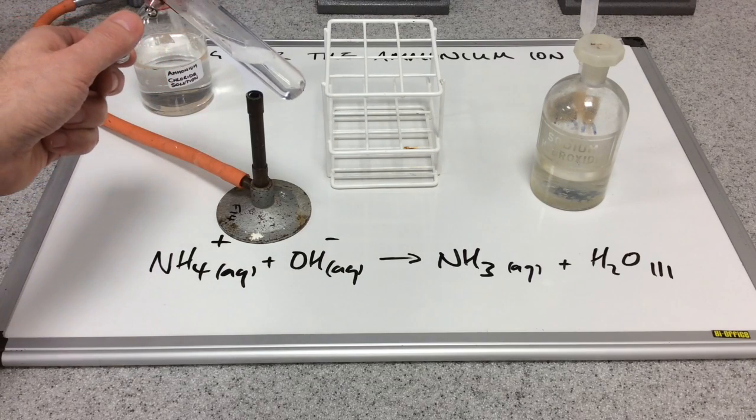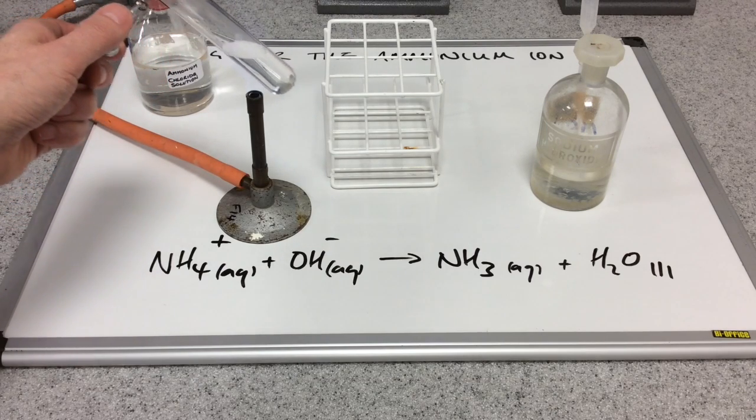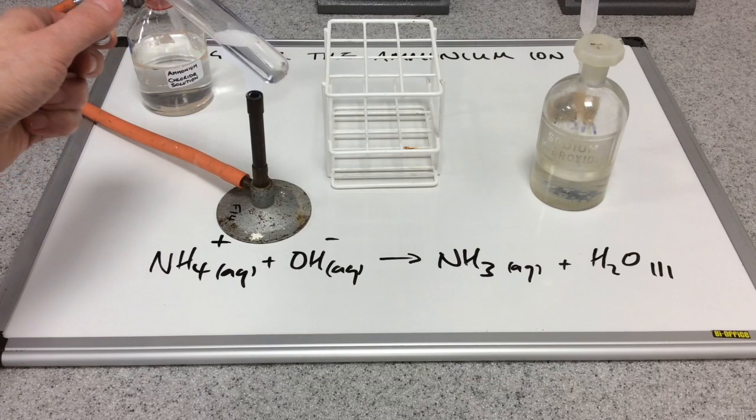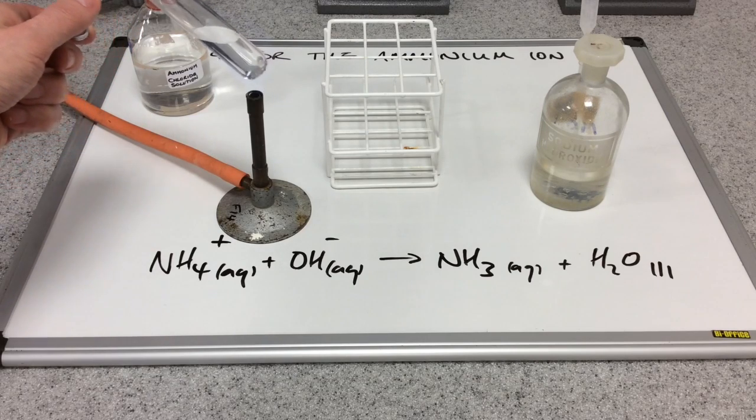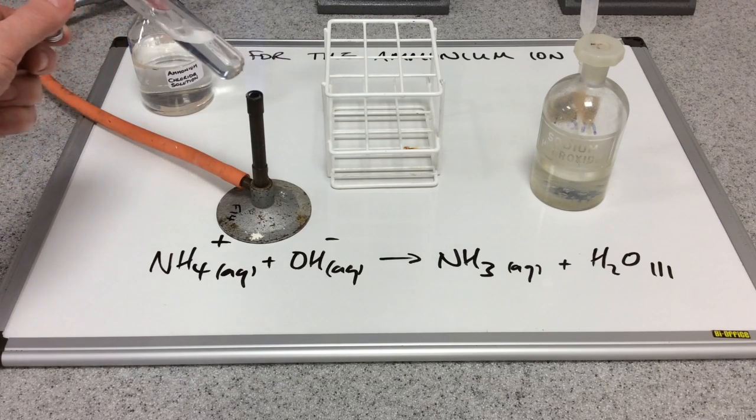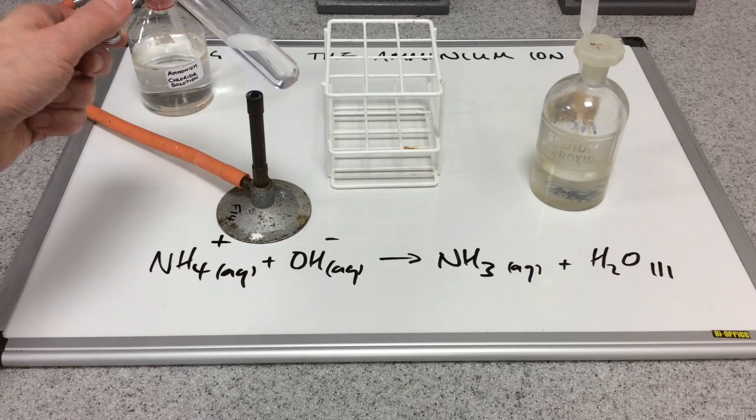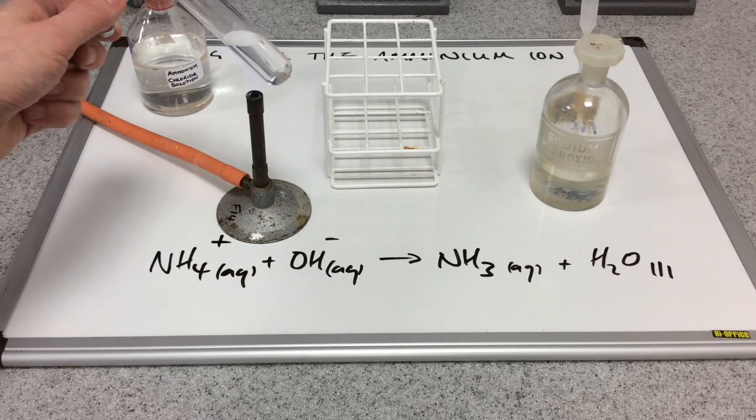I'm just warming the contents of the test tube. We're trying to turn that ammonia that's dissolved in the water into a gas, and hopefully it will do something to this damp red litmus paper.